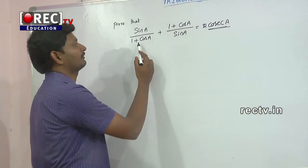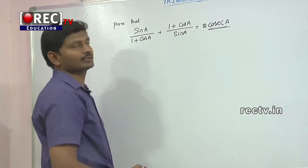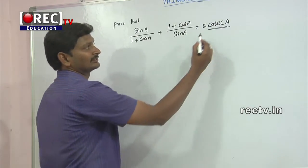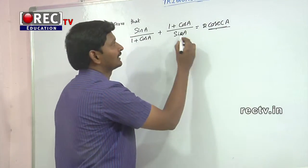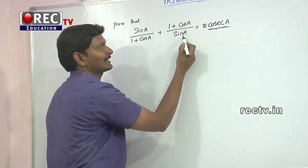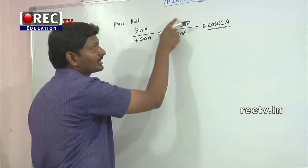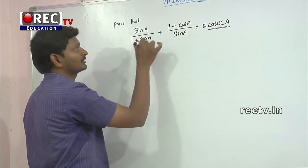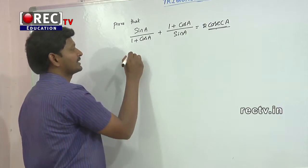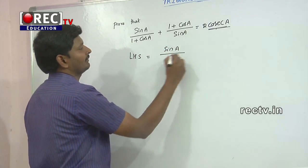We need to prove that sin(a)/(1+cos(a)) + (1+cos(a))/sin(a) is equal to 2·cosecant(a). We observe that the LHS already contains cosecant in the second term, since 1/sin(a) is nothing but cosecant(a). So we don't change the second term — we only need to work on the first part.